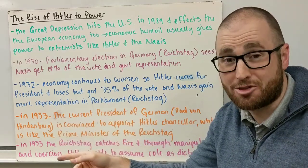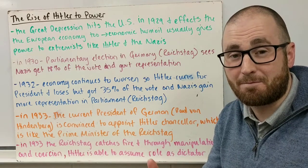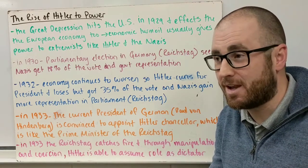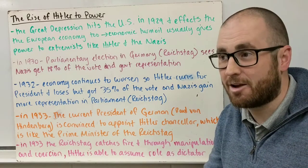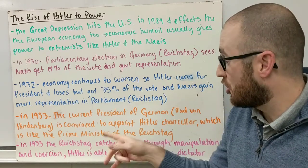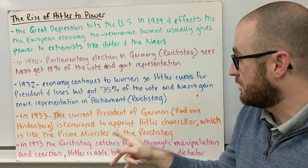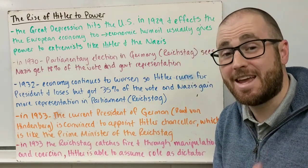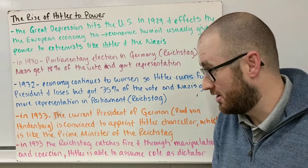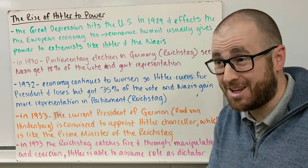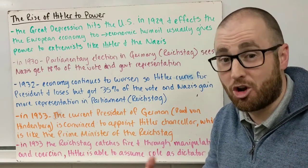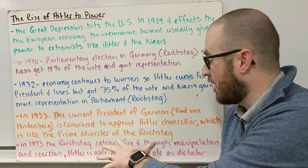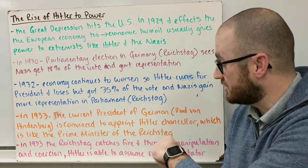Flash forward one year — because the Nazis had gained so much power, in 1933 there was government turmoil and they didn't really know who was in charge in parliament. In order to create some national unity, the current president of Germany, Paul von Hindenburg, was convinced to make Hitler the chancellor, which is basically the leader of the parliament — the prime minister.